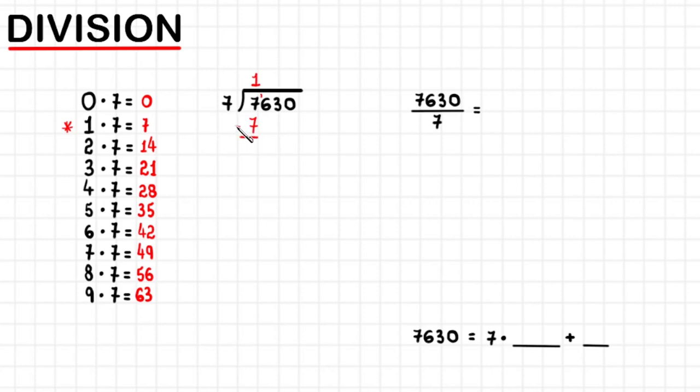This is a pretty easy subtraction, because 7 minus 7 equals 0. After a subtraction, we bring down the next digit. The next digit is 6. So now we have here 0, 6. Forget about the 0. Think only about the 6.